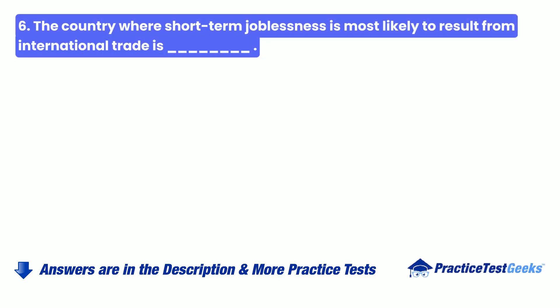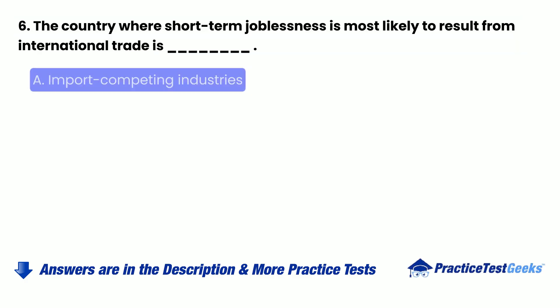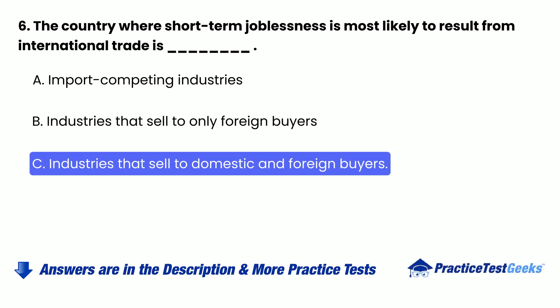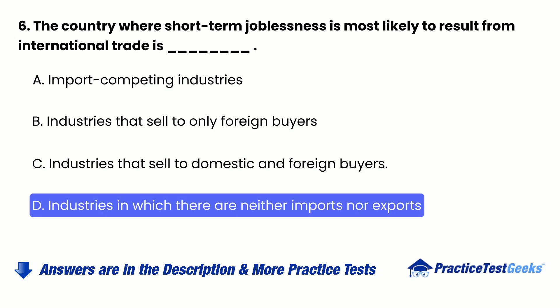Question 6: The country where short-term joblessness is most likely to result from international trade is blank — A. Import competing industries, B. Industries that sell to only foreign buyers, C. Industries that sell to domestic and foreign buyers, D. Industries in which there are neither imports nor exports.